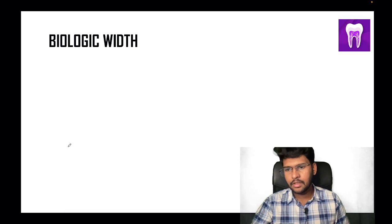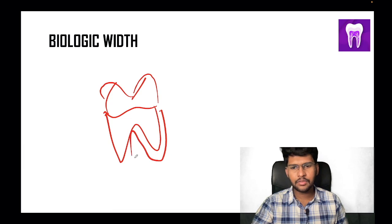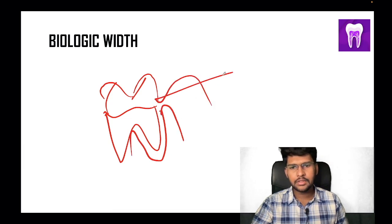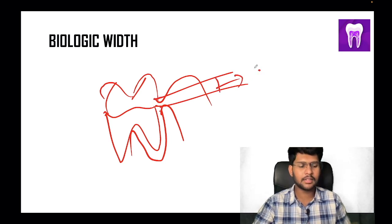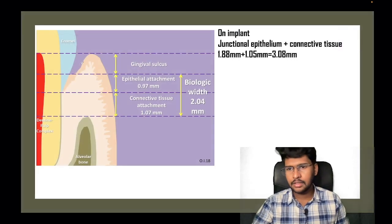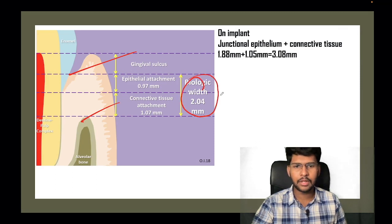What is biologic width? It is the distance from the crest of the interdental alveolar bone to the gingival epithelial attachment. From the attachment to the crest of the alveolar bone, this width is known as biologic width. As you can see here, it is around 2.4 mm on average.